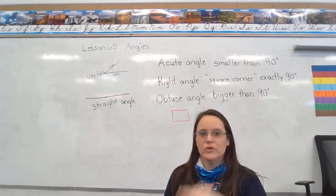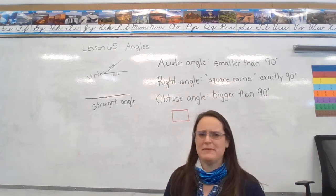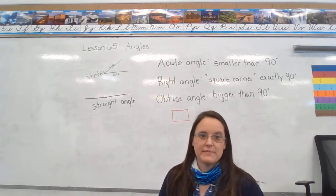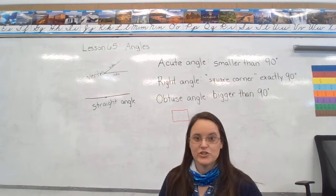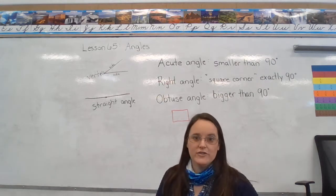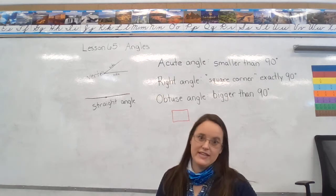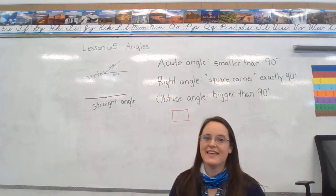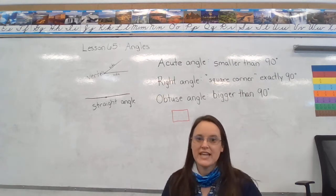I'm going to show you a tool in a later lesson. Actually, it might be in fourth grade where we use something to measure the exact degrees of angles. But for today, what you need to know is a right angle is 90 degrees and then we have acute angles.